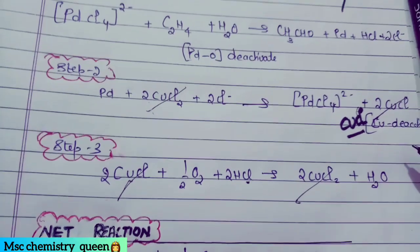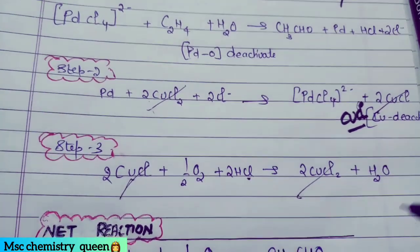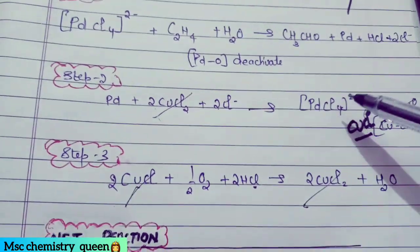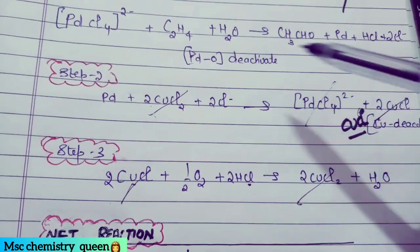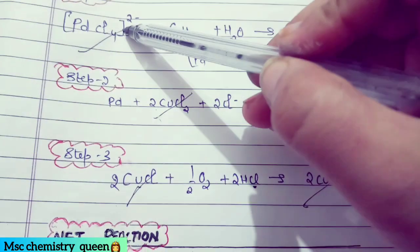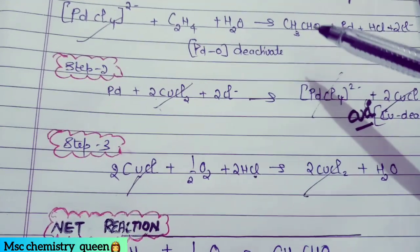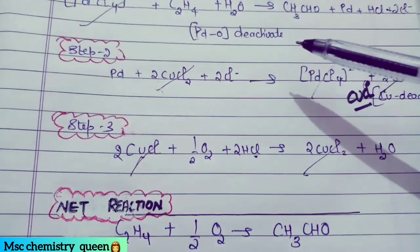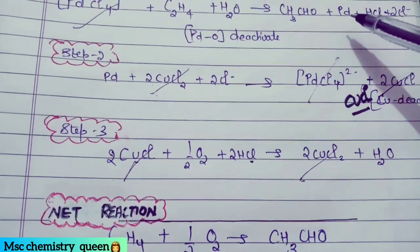Water cancels out, HCl cancels out, and palladium cancels out. 2 CuCl₂ cancels out because we have taken all three reactions together, giving us the net overall reaction.